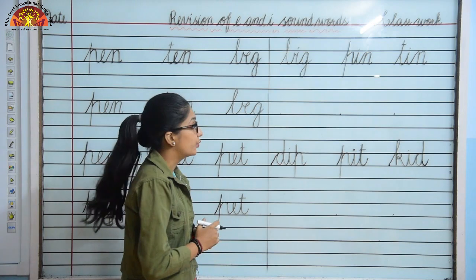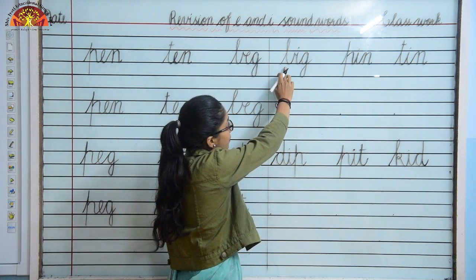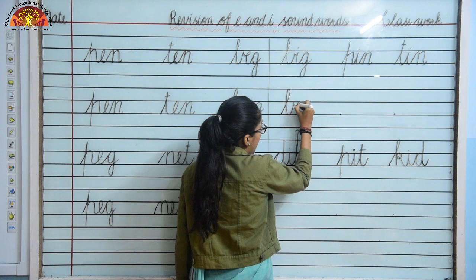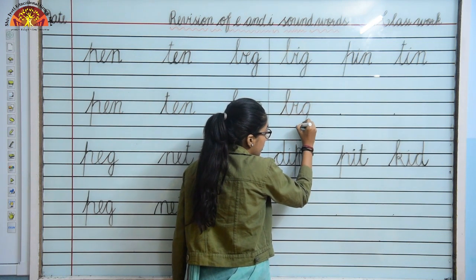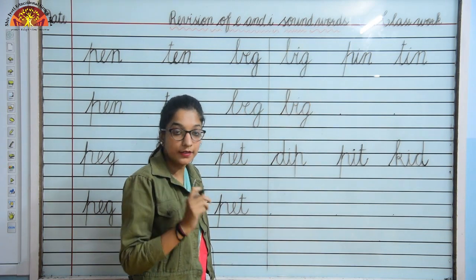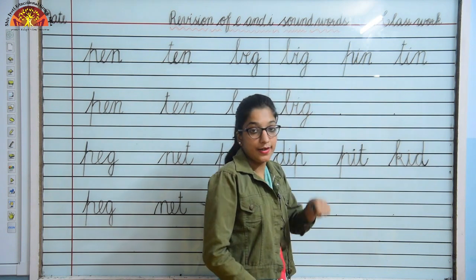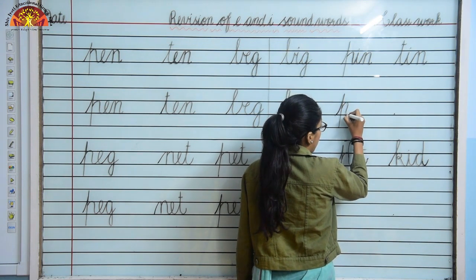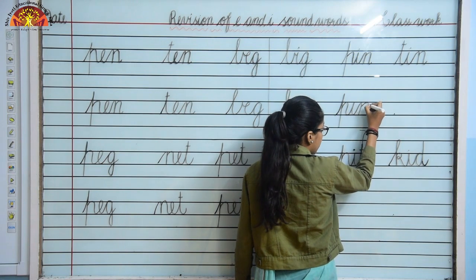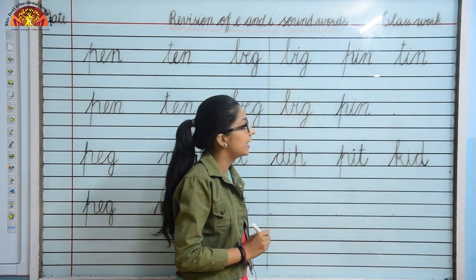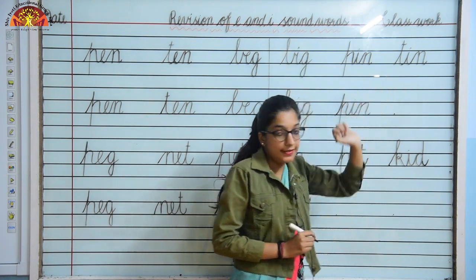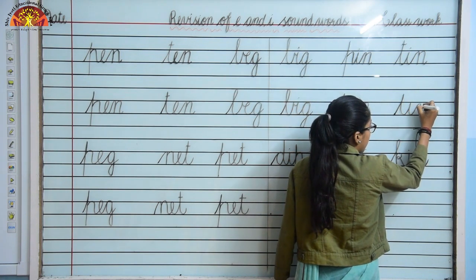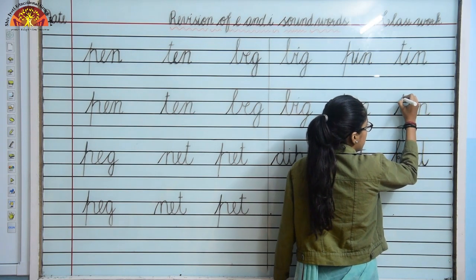Now kids, come to I sound words. So our first I sound word is B, I, G — Big. Let's write B, I, G. Touch the lines properly. Next I sound word is P, I, N — Pin. So let's write P, I, N — Pin. Next T, I, N — Tin. So write here T, I, N — Tin.